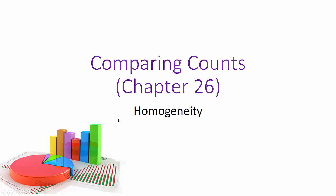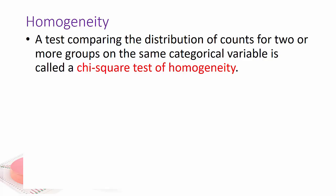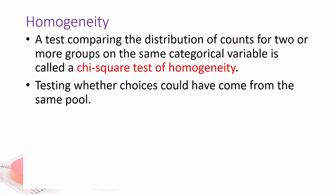Alright, so we will continue using chi-square. This time we're going to do a test for homogeneity, and what that does is it compares the distribution of counts for two or more groups on the same categorical variable. In other words, do both groups behave the same, so could those groups have come from the same pool?